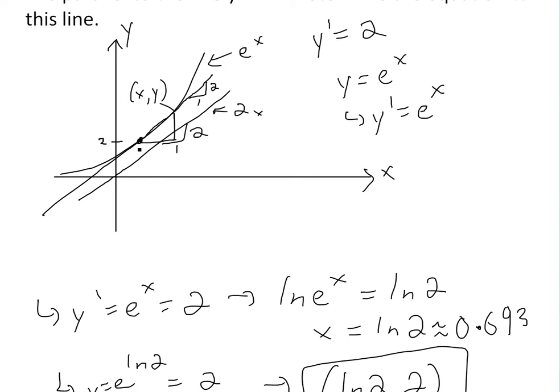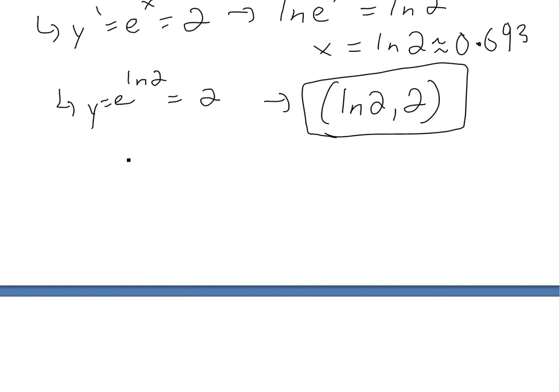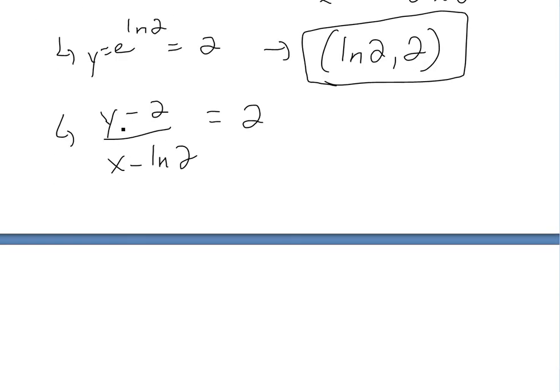Because this is 2, and this is ln 2. And the difference between this point here x and this is just x minus ln 2. And then the rise over run is the slope, so we could write it right here like this: y minus 2 over x minus ln 2 equals 2. That's the slope, because there is rise over run. And this rise over run equals 2, and then we just solve for y now.